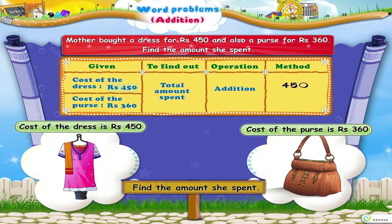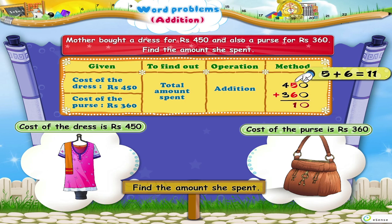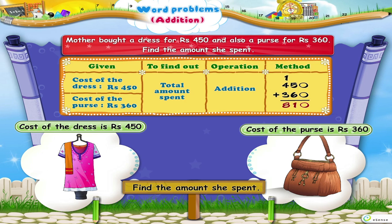Let us add 450 and 360. 0 plus 0 equals 0. 5 plus 6 equals 11, so we write 1 and carry 1 forward. Now, 4 plus 3 plus 1 equals 8. So, the amount spent is rupees 810.